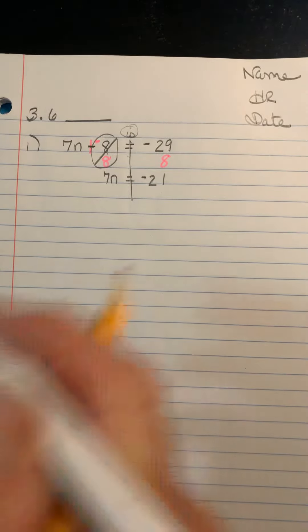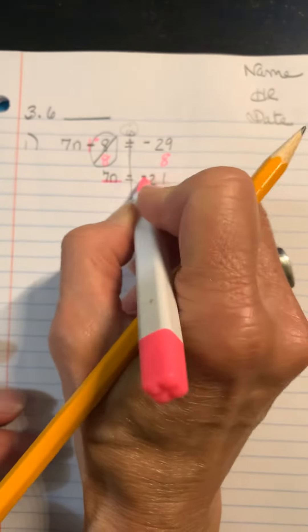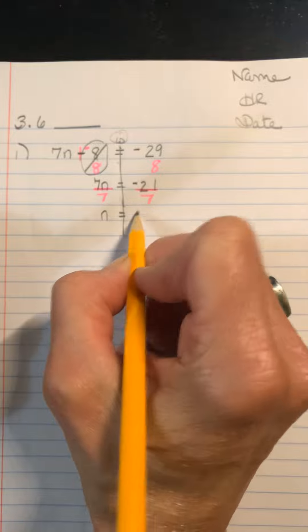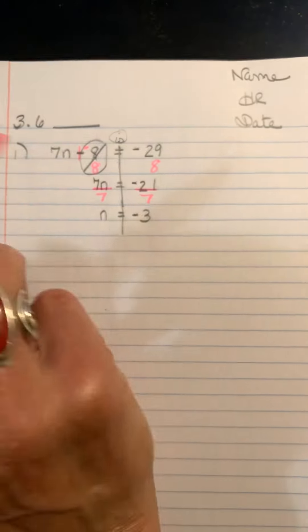Multiplication to be undone with division. Get your division line. Get 7 underneath. n is equal to negative 3. Here is your solution.